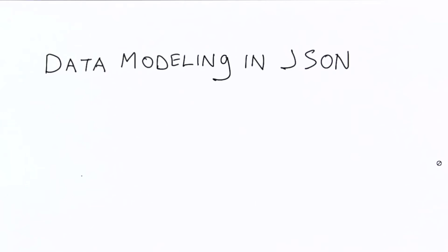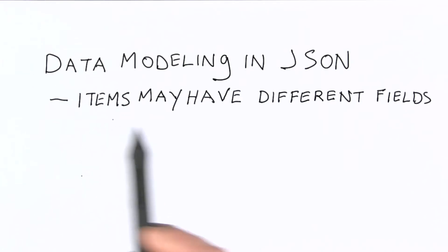Let's talk a little bit about some of the specifics for data modeling in JSON. First thing we should mention is that items may have different fields.